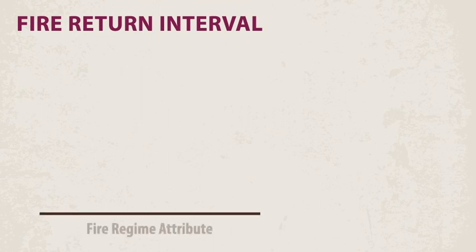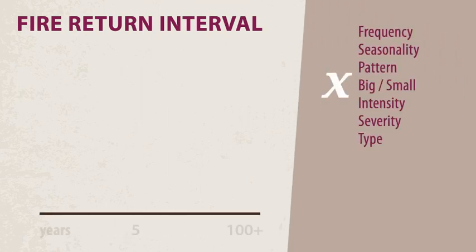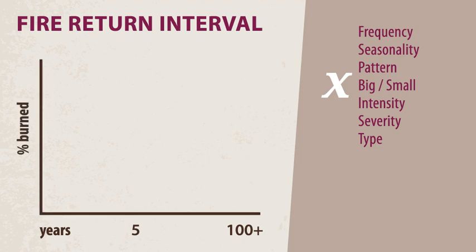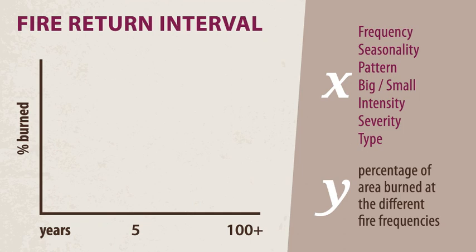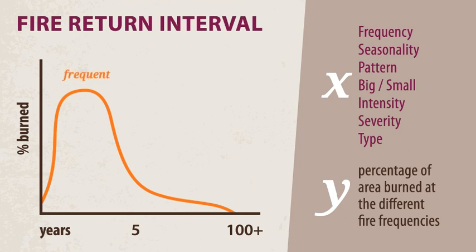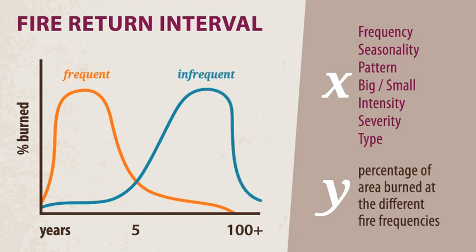Along the horizontal axis is one of the seven fire regime attributes — here it shows the range of fire frequency. Along the vertical axis is the proportion of area burned, showing what percentage of all the acres that burned on a landscape did so at the different fire frequencies. A distribution skewed left shows most fires occur with only a few years between them, while a distribution skewed right shows most fires occurred infrequently. It's important to think about the distribution and variation within a fire regime, not just the average or range — it gives more information about how and why things work.